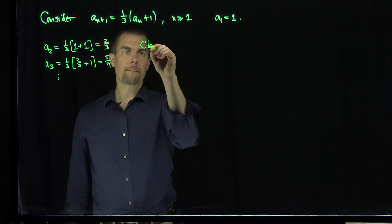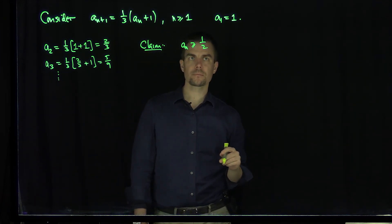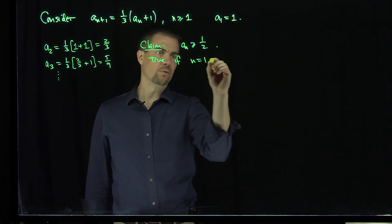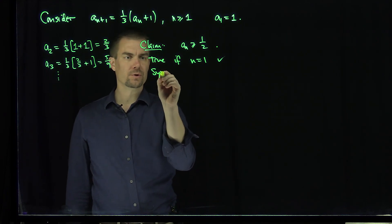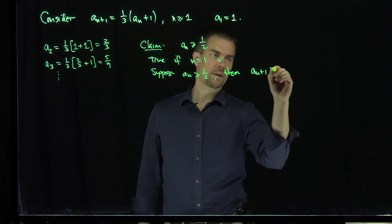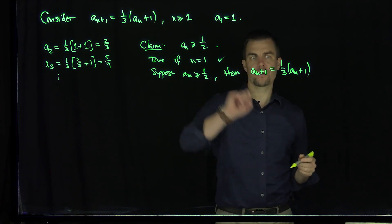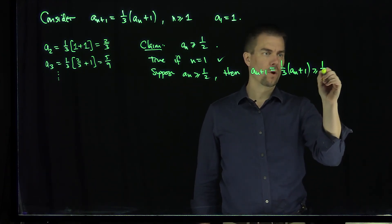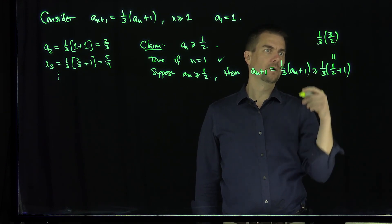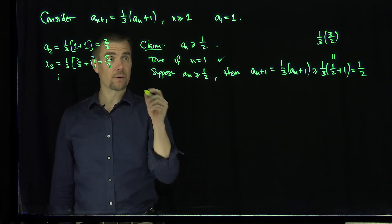Our first claim is that a_n is greater than or equal to one-half for all n. This is clearly true for n = 1. I'll prove this by induction. Suppose a_n ≥ 1/2. Then a_{n+1} = (1/3)a_n + 1/3, and by the induction hypothesis this is greater than or equal to one-third times (one-half + 1), which is one-third times three-halves, which equals exactly one-half.